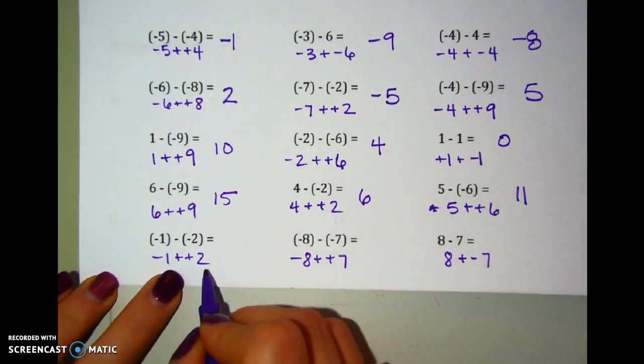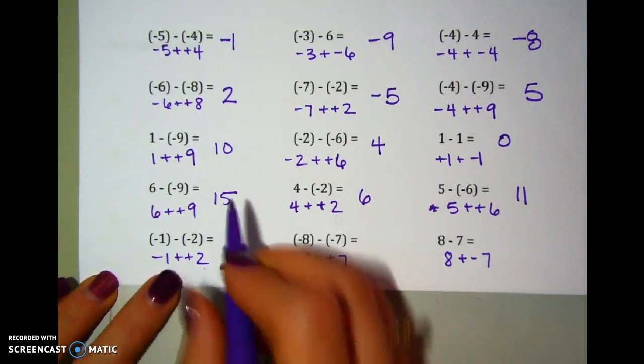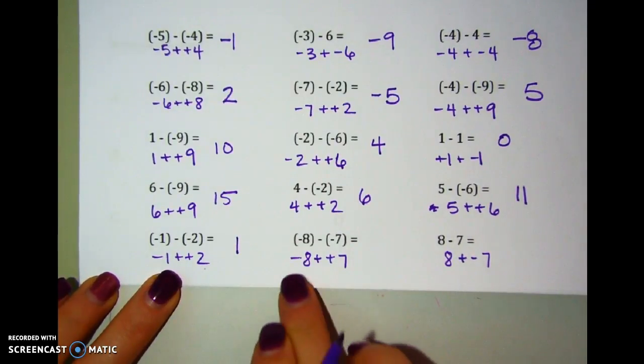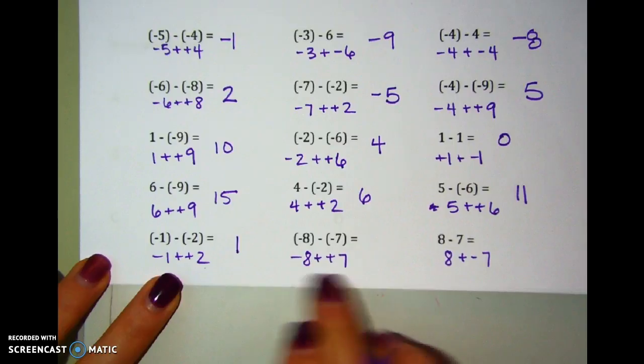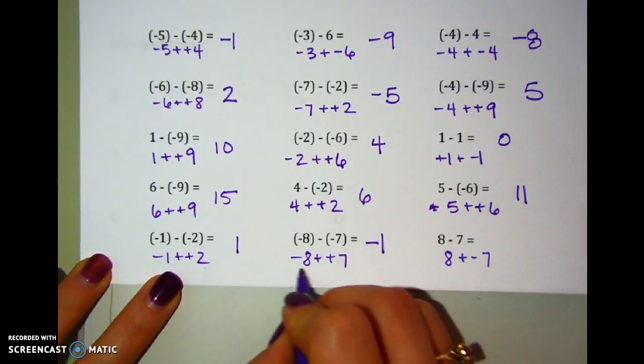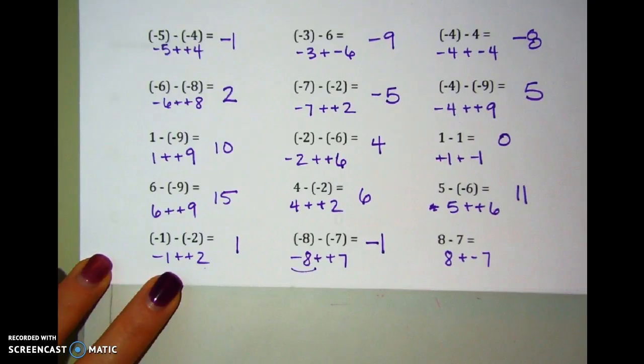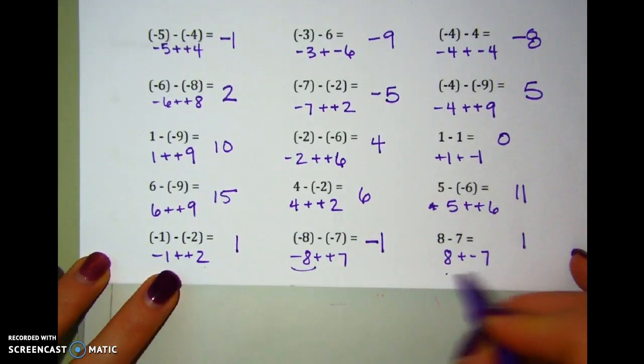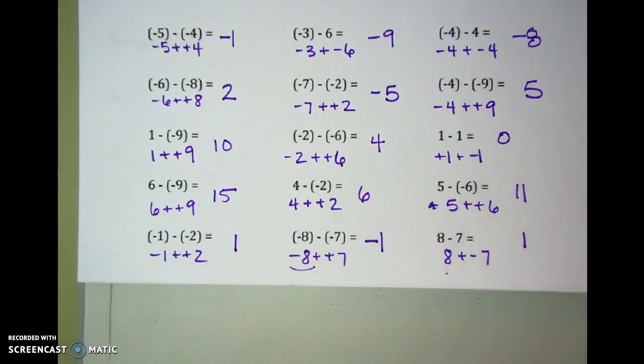Negative 1 plus 2. I have one positive, one negative, so subtract them. Keep the sign of the bigger number. Negative 8 plus 7. I have one positive, one negative. Subtract them, but keep the sign of the bigger. Negative 8 is bigger, so I have a negative answer. And 8 plus negative 7. I have one of each again. Subtract them. Keep the sign of the bigger number, so positive 1.